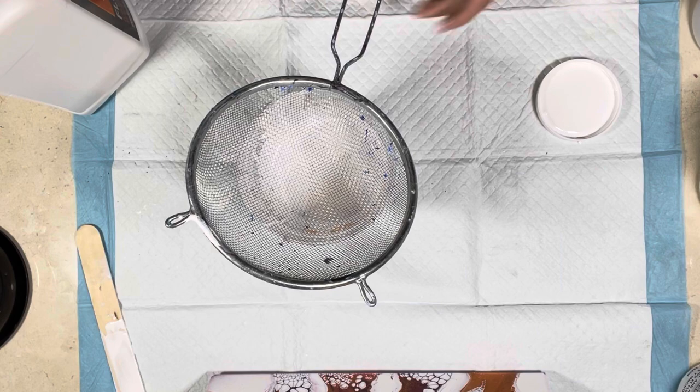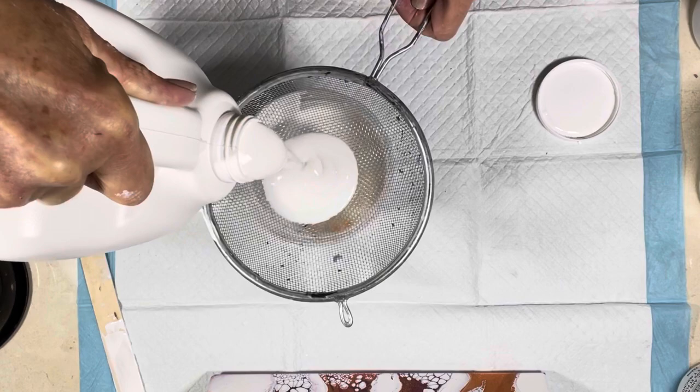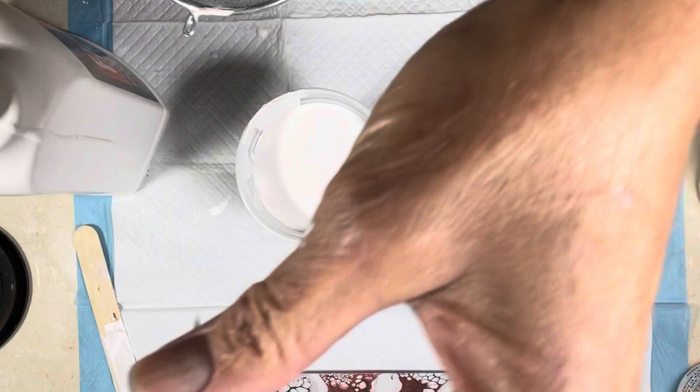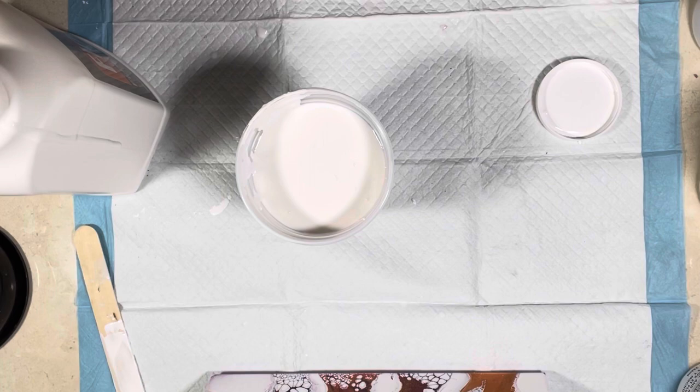I'm going to put another 12 ounces of the Floetrol, brand new. Always strain it. All right there we go, now that's 24 ounces. What the heck is that? Oh and look at this, isn't this lovely? This came out of my Flood Floetrol, my brand new one. So there's a good reason to strain.